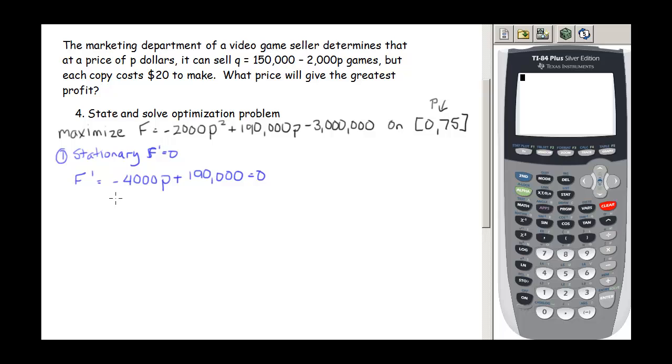So our F prime is going to be equal to negative 4,000P plus 190,000. We want this to equal 0, so this gives us 190,000 equals 4,000P. Divide by 4,000 and we get P equals 47.5. So this means our price would have to be $47.50.